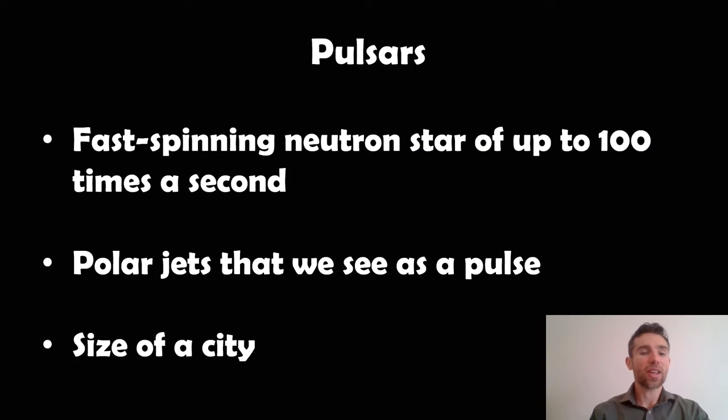So pulsars, they're incredibly fast-spinning neutron stars, and they can spin up to hundreds of times per second. They have these polar jets, which we see as a pulse. Those polar jets that they're emitting very high energy, they're from the magnetic axis, and the magnetic axis doesn't align to the rotation axis. So they kind of sweep out like a lighthouse. As we look at them from Earth, we get a pulse every time they go around. So that's why they're called pulsars, basically. And they're about the size of a city, yet they can be massive. They will weigh more than our Sun, but they'll be the size of the city. So they're very, very dense.